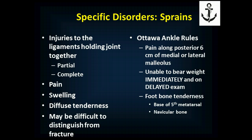Sprains are injuries to the joint structure — specifically the ligaments that hold the joint together. They are tears, typically partial tears, where the structure pulls apart but is still holding together, maintaining the stability of the joint. Complete tears can also occur, in which case the joint loses its stability. They're associated with pain, swelling from local bleeding, and edema as fluid leaks out from cells.